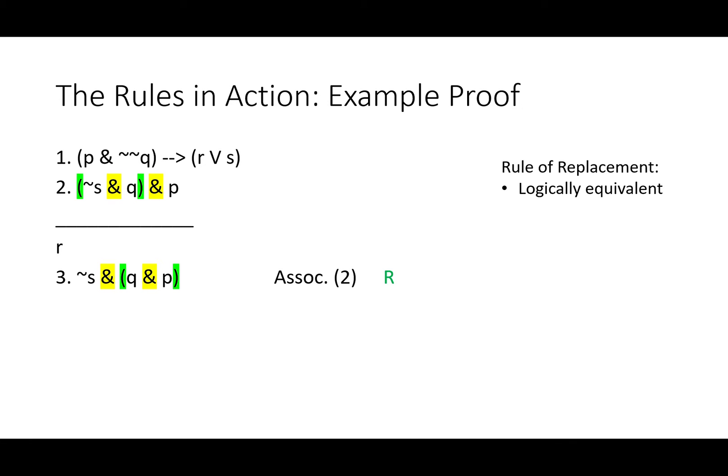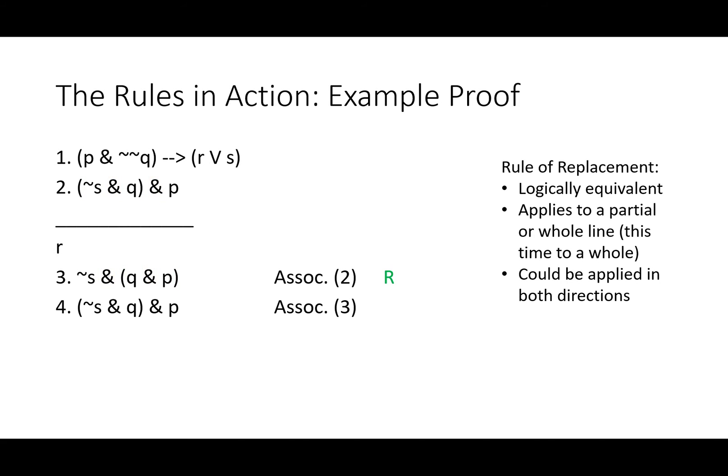Now take a look at those parentheses that moved from surrounding not S and Q to surrounding Q and P. Now not S is on its own. So as this is a rule of replacement, those two statements are logically equivalent. We've applied it to a whole line and we could apply it in the opposite direction if we wanted to. For instance, our next rule, line four, could be going right back to the form of line two. And then we could go right back to the form of line three as many times as we want. But we're not going to do that because that's a bit of a waste of time.